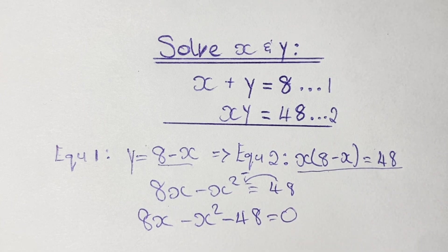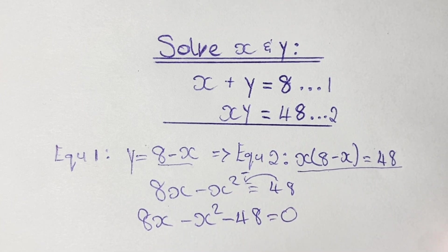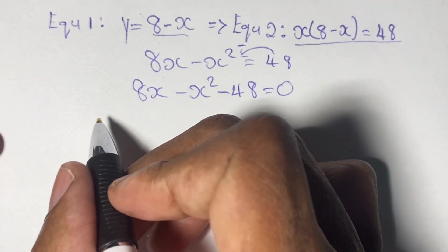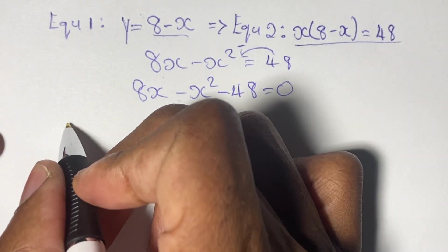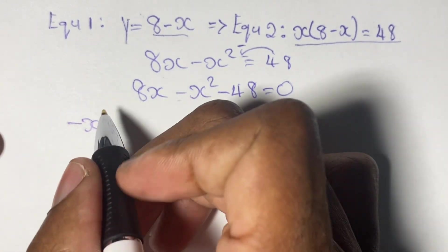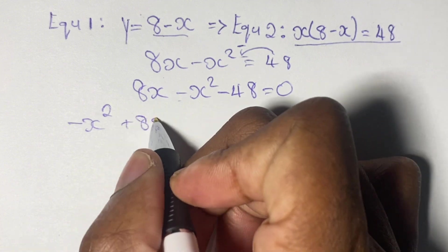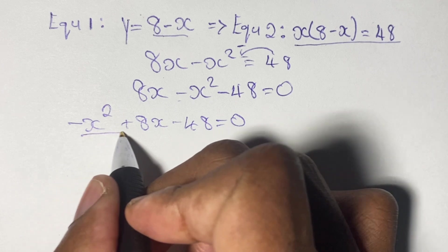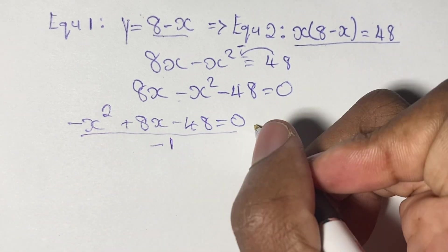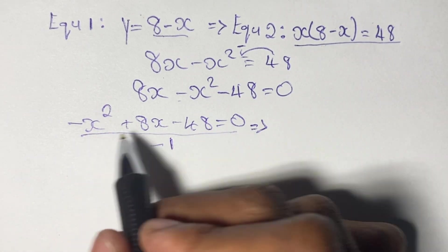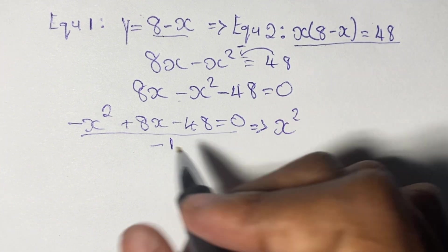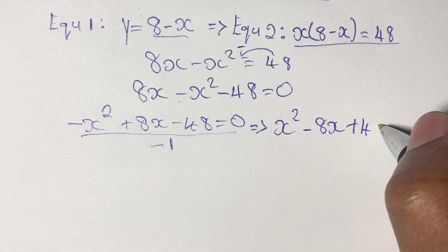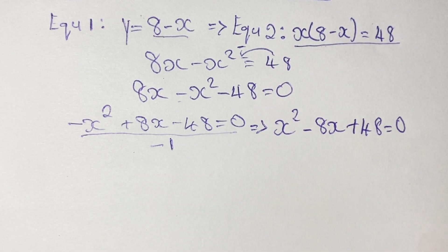As you can see, we have what we call a quadratic equation in the form ax squared plus bx plus c is equal to 0. We configure our equation to have negative x squared at the front: negative x squared plus 8x minus 48 equals 0. We need our a-value to be positive, so we divide by negative 1, giving us x squared minus 8x plus 48 is equal to 0.